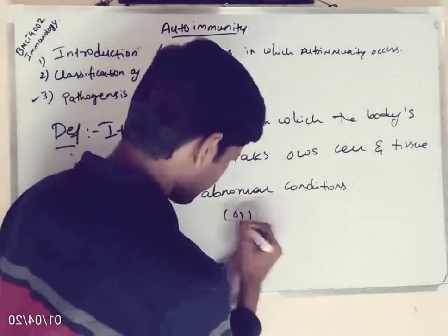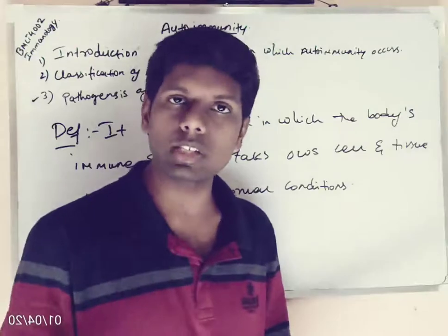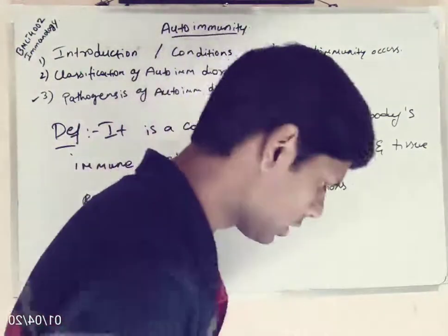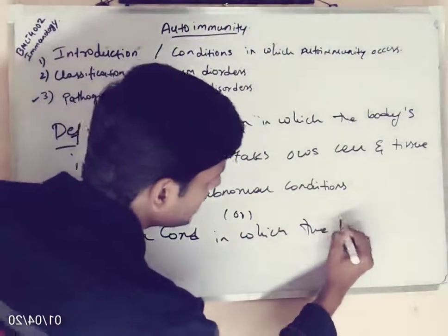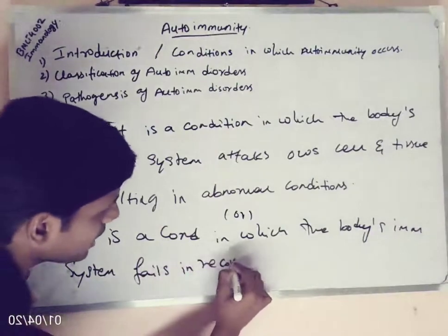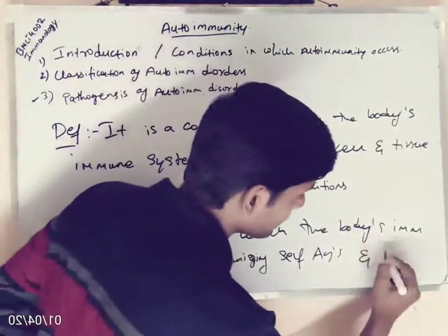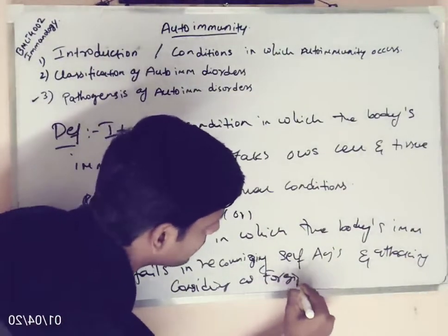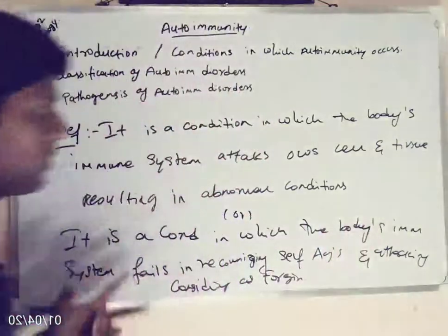We can also say autoimmunity is when the immune system fails in recognizing self-antigens. When the immune system is unable to recognize our own antigens as self-antigens, it will think this is a foreign antigen and it will start killing our own cells. So it is a condition in which the body's immune system fails in recognizing self-antigens and attacks them, considering them as foreign.